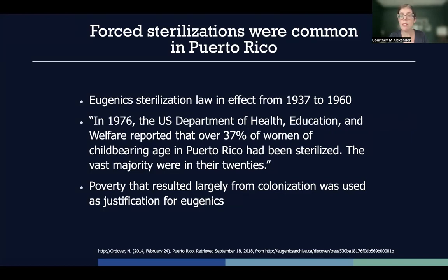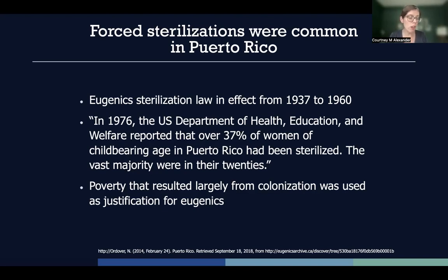The impact of Law 116 persisted for generations. While overpopulation was cited as the reason for widespread poverty on the island and therefore the justification for sterilization, historians argue that the history of colonization and the sugar industry better explained poverty. Additionally, Puerto Rico was without full constitutional rights until 1947 and did not have a democratically elected governor until 1948. Law 116 remained in effect in Puerto Rico until 1960.